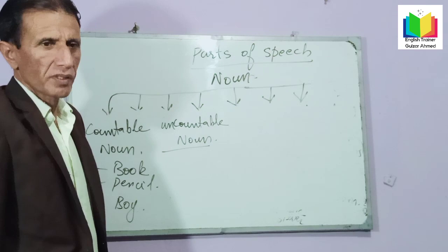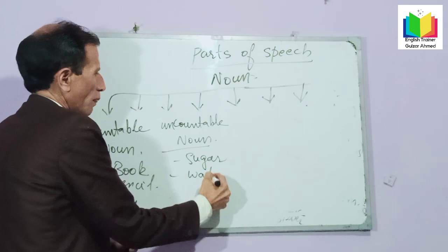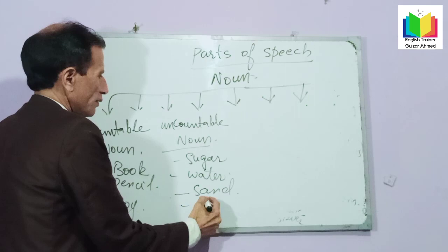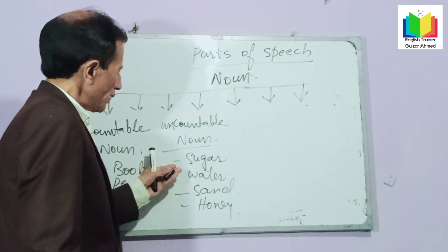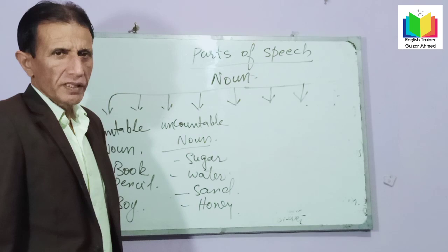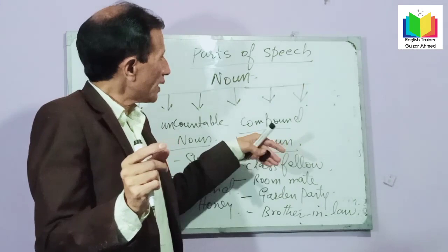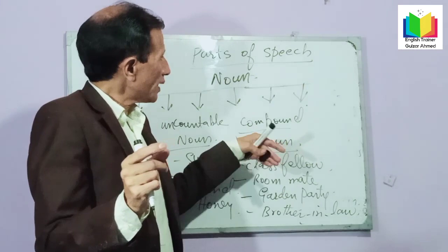Next: uncountable noun. Nouns which cannot be counted are called uncountable nouns, like sugar, water, sand, honey — all these nouns cannot be counted. The same rule applies: usually we cannot add the article 'the' before them, but if they are special, then we can add the article. There are other parts of speech which you will be taught in the next video. Good luck.